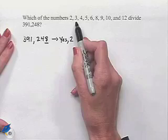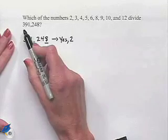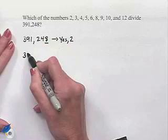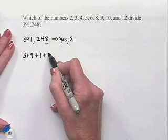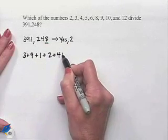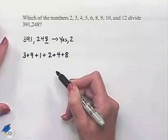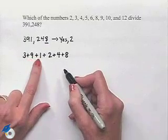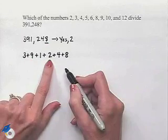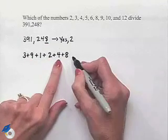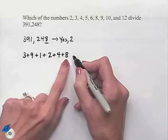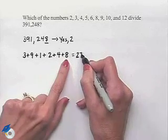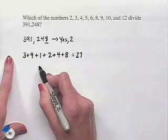Now let's look at number 3. To determine whether or not 3 divides this number, one way is to take the digits and add them together. This will allow us not to have to actually do the division. So we're going to add together: 3 plus 9 is 12, plus 1 is 13, plus 2 is 15, plus 4 is 19, and then 19 plus 8 gives us a value of 27.